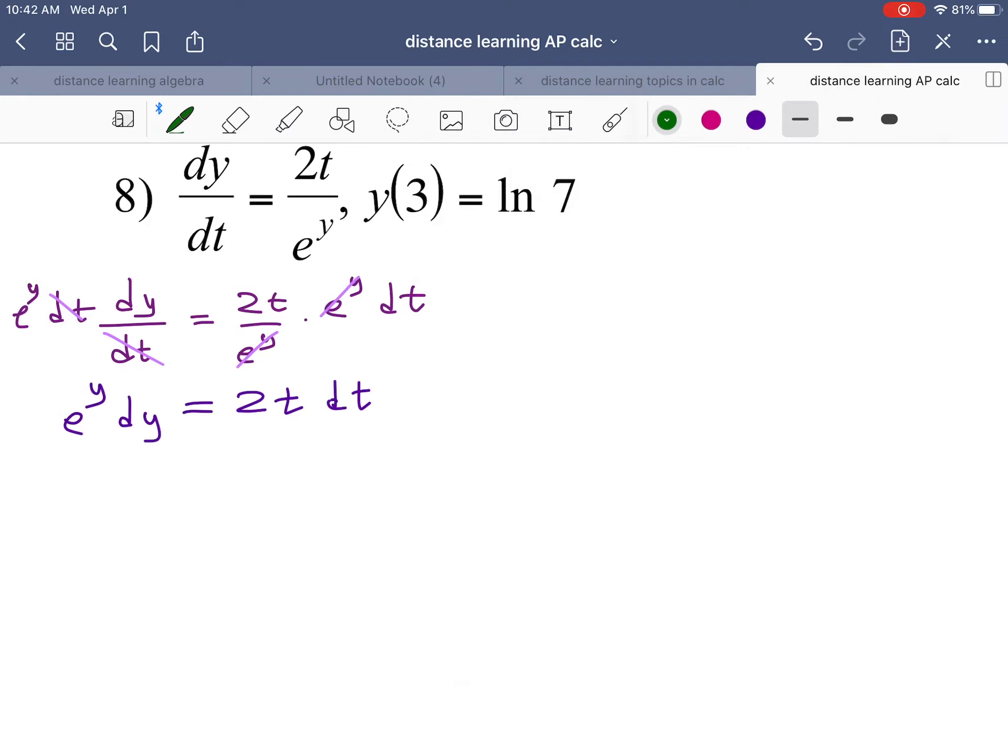Time to integrate. e to the y dy integrated will give us e to the y. 2t dt integrated will give me t squared plus c. Integration is done. Let's use our particular solution—in this case it's 3 comma ln of 7.